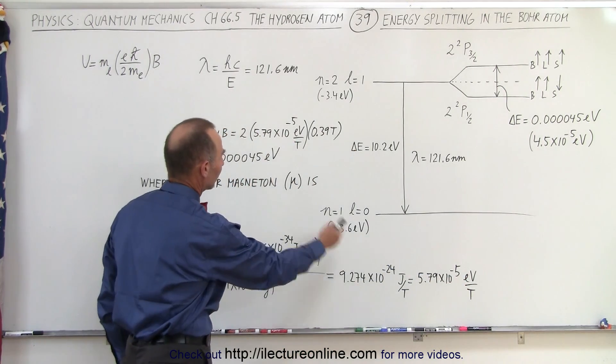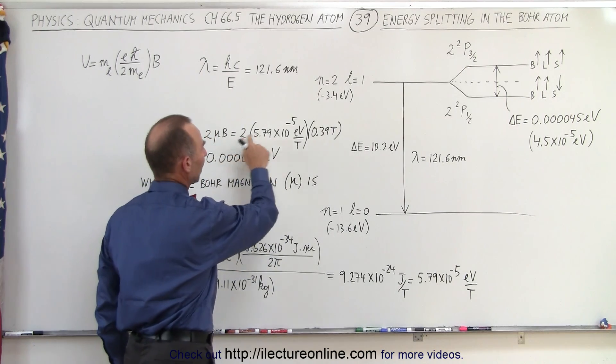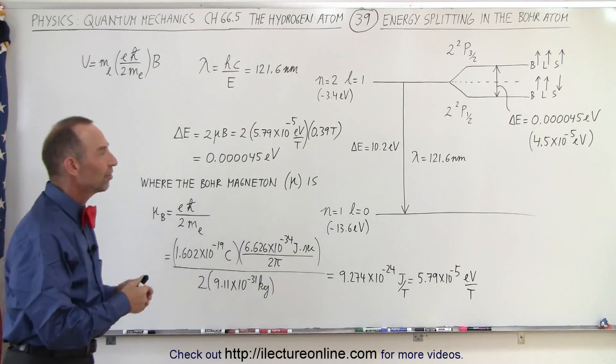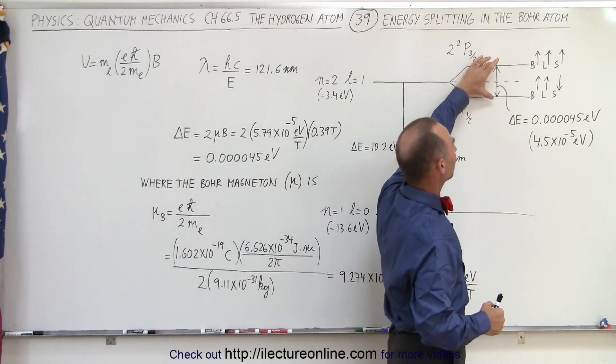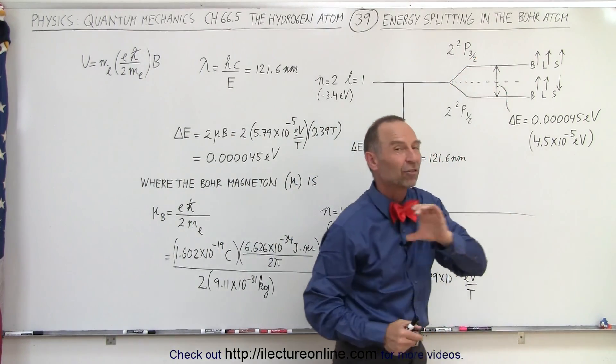Notice that's about the same value, because when we multiply 2 times 0.39, we almost get 1. And so you can see that when you multiply all that together, you get the value of the difference in the energy of that fine splitting.